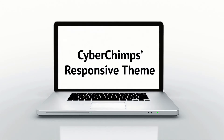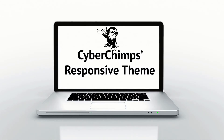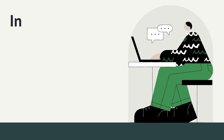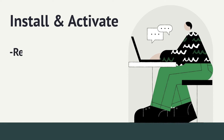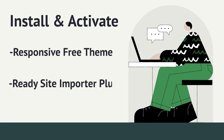Now create a construction website with Cybertron's responsive theme. The first and foremost thing you need to do is install and activate the responsive free theme and Redisite Importer plugin. You can find the download link in the description box below. Alternatively, you can also find them in the WordPress repository.